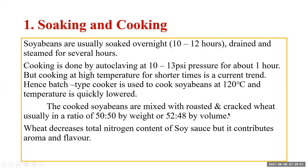The cooked soya beans are now mixed with roasted and cracked wheat. Wheat is not cooked — it is roasted and cracked, or coarsely ground. The cracked wheat and cooked soya beans are mixed in a ratio of soya bean to roasted and cracked wheat of 50:50 by weight or 52:48 by volume. When added to the soya beans, wheat decreases the total nitrogen content of soy sauce but it contributes to aroma and flavor.